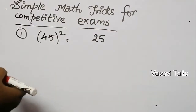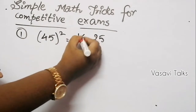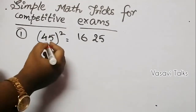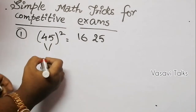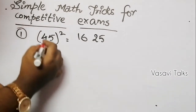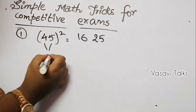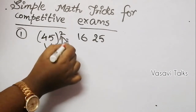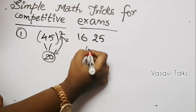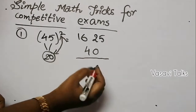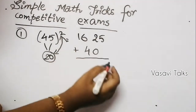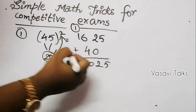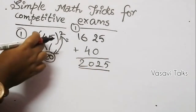For example, 25 squared: the last two digits are always 25. For the first part, take the tens digit — here it's 4. We multiply 4 and 5 to get 20. Then multiply 20 by 2, giving 40. Now add these two parts together: the answer is 2025. So 45 squared is 2025.